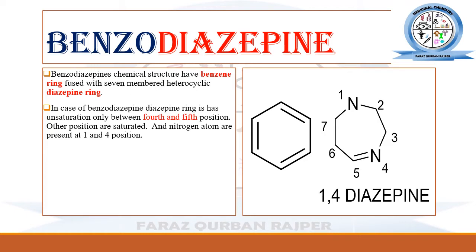The diazepine ring is a heterocyclic ring that contains two nitrogen atoms as heteroatoms. In benzodiazepine, the unsaturation is present only between the fourth and fifth position of the ring. The nitrogen atom is present at the first and fourth position, and that is why this type of diazepine ring is known as the 1,4-diazepine ring fused with the benzene ring.